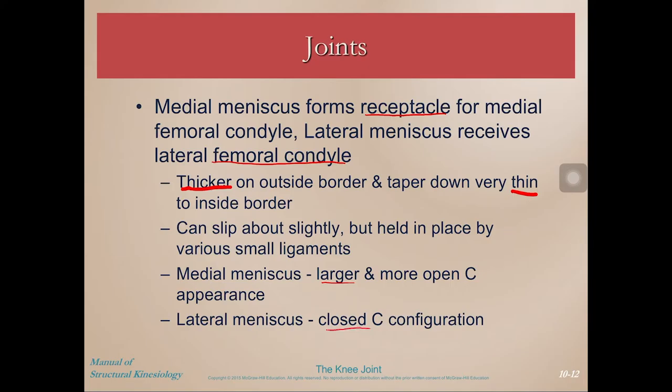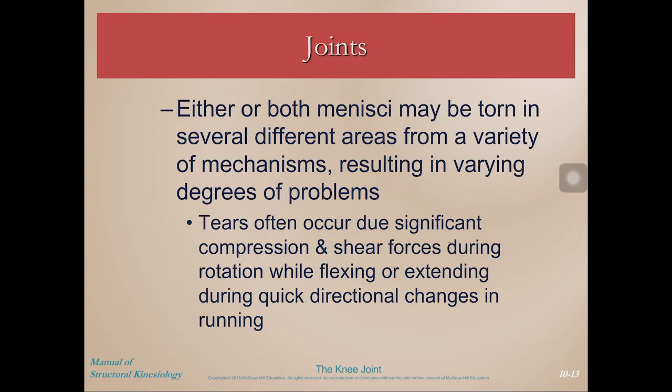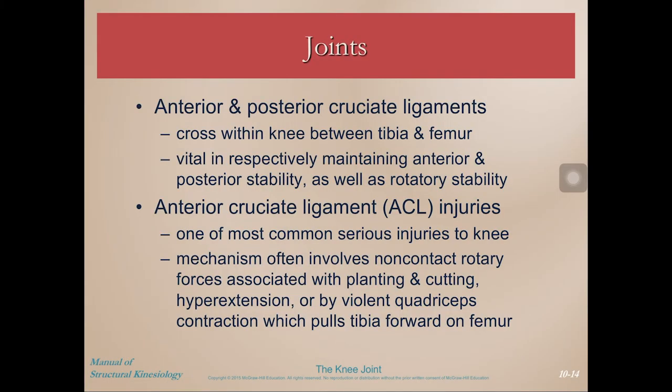Each meniscus forms a receptacle for the femoral condyles, with a thicker outer border tapering to a thin inner border. The medial meniscus is larger while the lateral meniscus is smaller with a more closed C configuration. Because of that tapering from thick to thin, the femoral condyles slip right into place. Either meniscus can be torn — from chronic causes like long-term jogging, or acute causes like a quick twisting motion. Tears often occur due to significant compression and shear forces during rotation while flexing or extending.